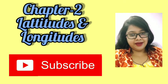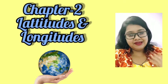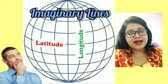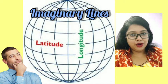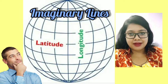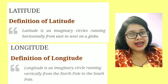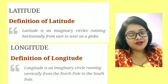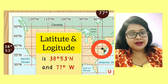Children, today we are back with the second chapter — latitudes and longitudes. Both of these are actually imaginary lines drawn on the surface of the earth. Their purpose is to precisely give us or determine the location of any particular place on the earth's surface.